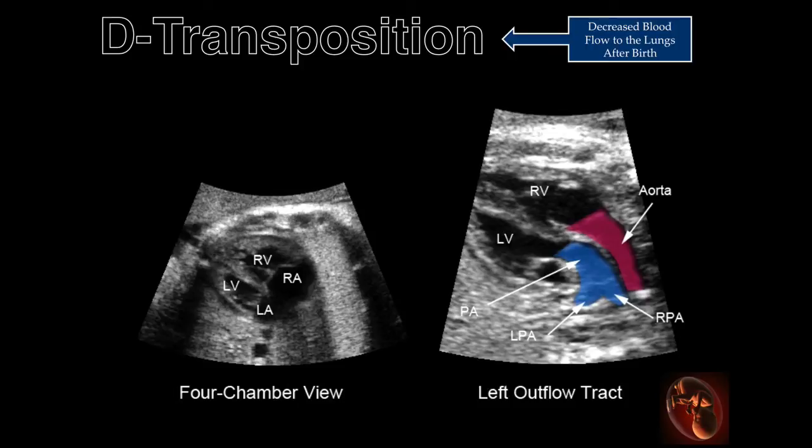Although the four-chamber view is often normal in fetuses with transposition, the four-chamber view in this example demonstrates disproportion between the left and right atrial and ventricular chambers, with the right side larger than the left. This is most likely secondary to volume loading of the right side of the heart, which could be secondary to a ventricular septal defect not seen in this view.